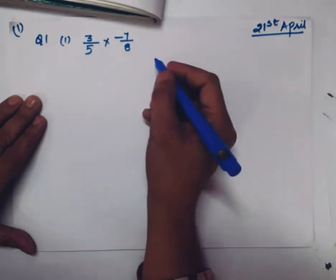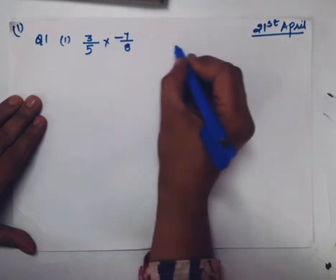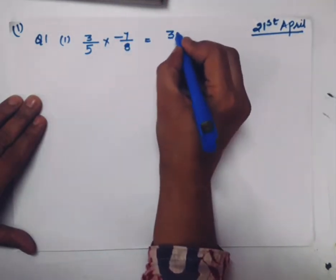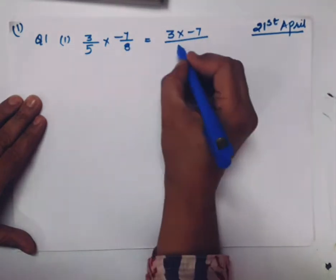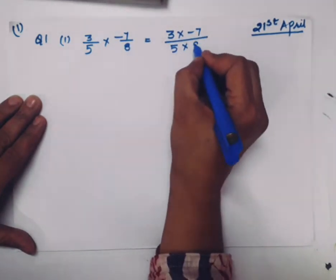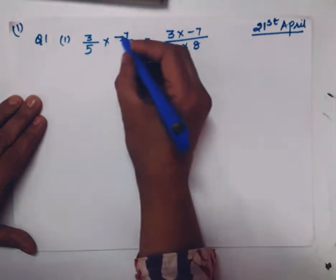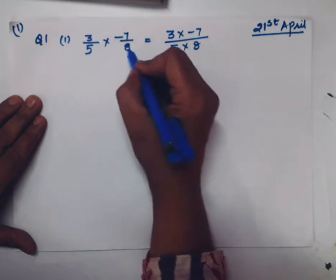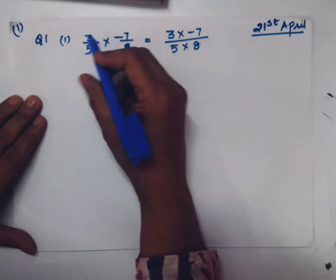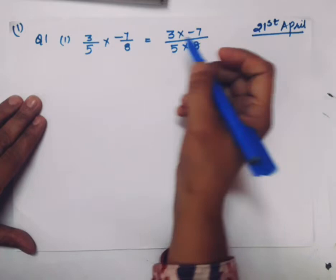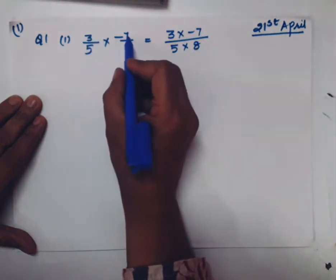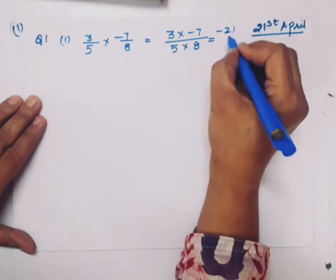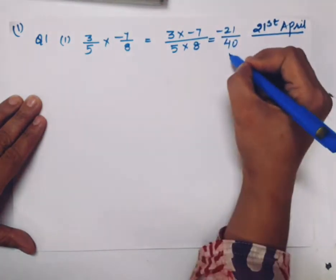The multiplication process says we will multiply the numerator by numerator, means 3 multiply by -7, and denominator by denominator. We will first try if there is a common divisor, then we will cut down. And if it is not, then you have to multiply numerator to numerator, 3 into -7, and denominator to denominator. So what should be answer? -21/40. This is your answer.